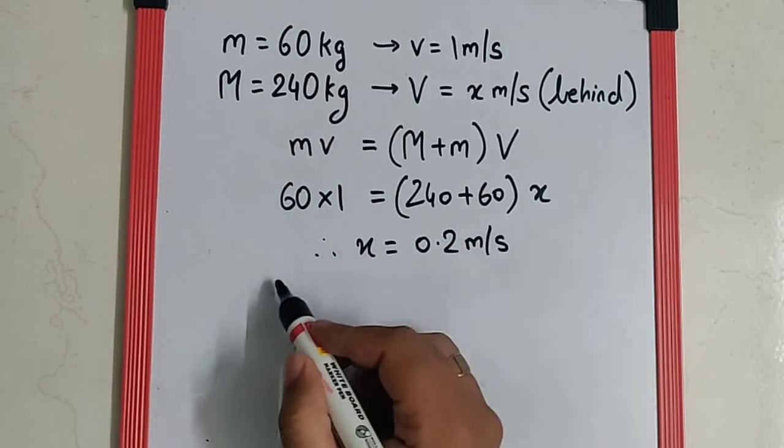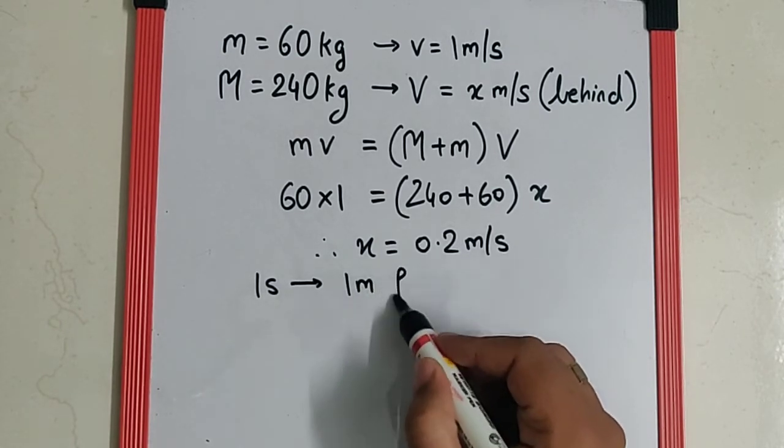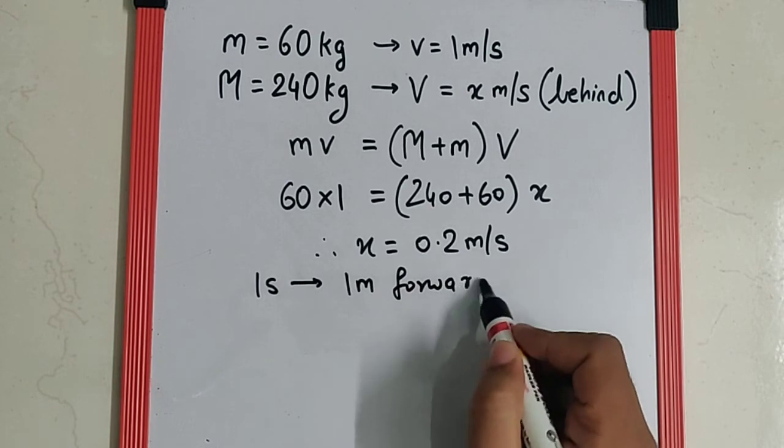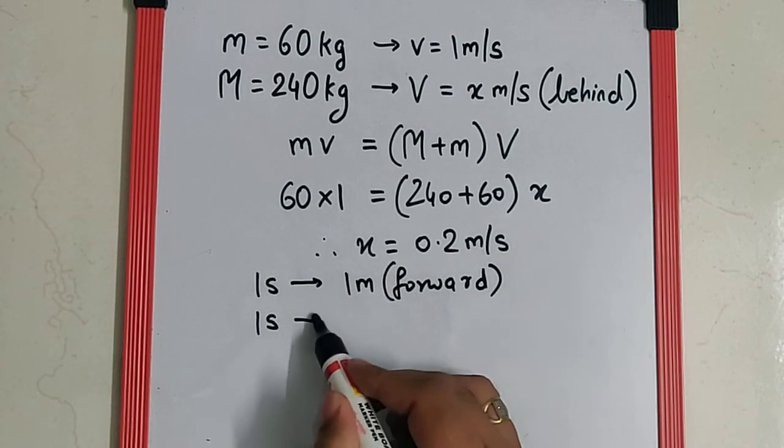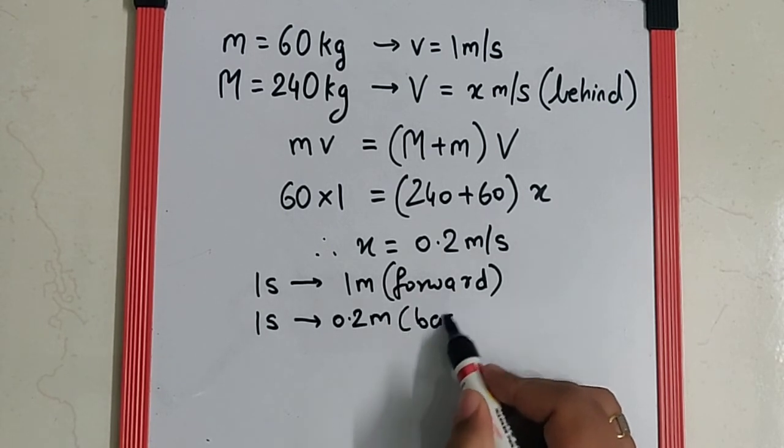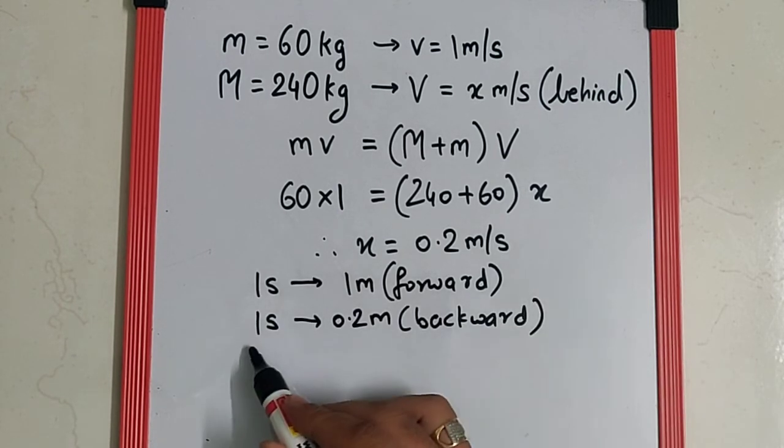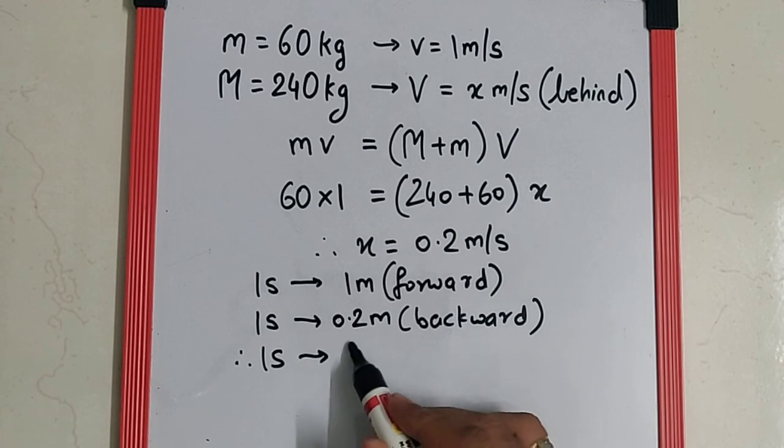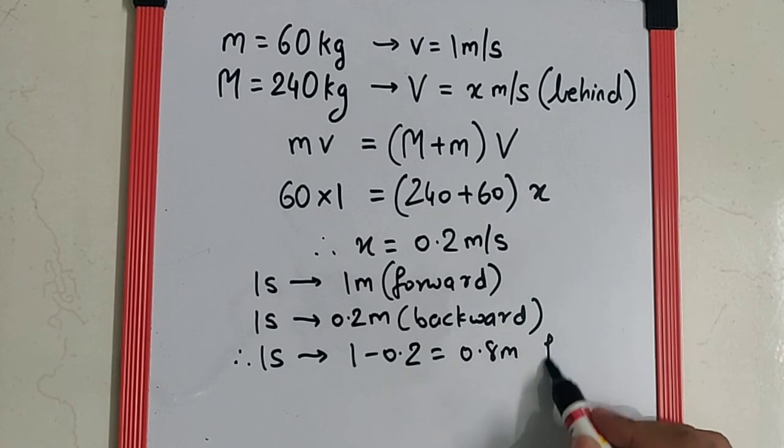So now I can say in one second man covers 1 meter forward and the trolley in the same one second covers 0.2 meter backward taking the man along with it. So the net motion in one second is 1 minus 0.2 that is 0.8 meter forward.